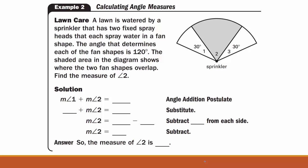Example number two, calculating angle measures. Lawn care. A lawn is watered by a sprinkler that has two fixed spray heads that each spray water in a fan shape. The angle that determines each of the fan shapes is 120 degrees. The shaded area in the diagram shows where the two fan shapes overlap. Find the measure of angle 2.